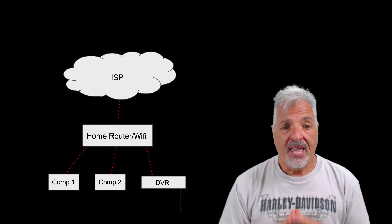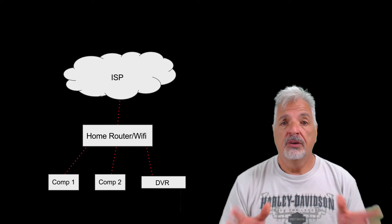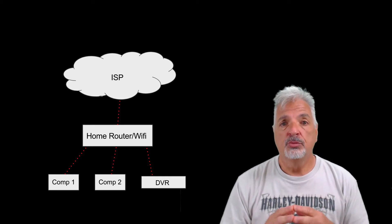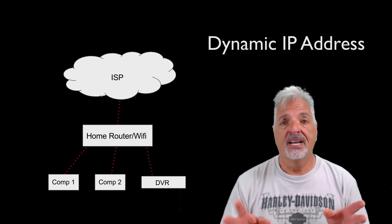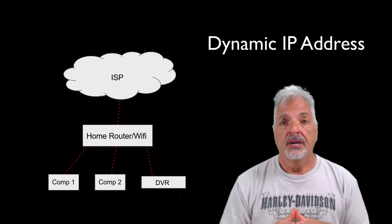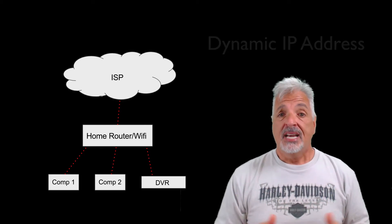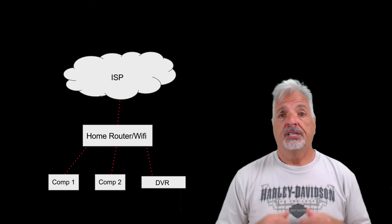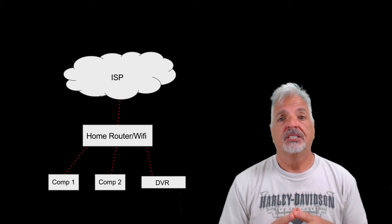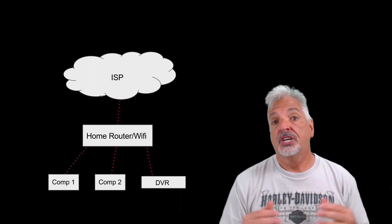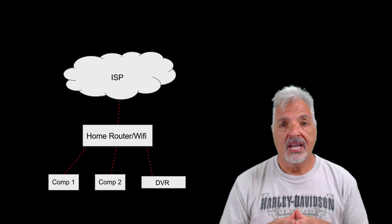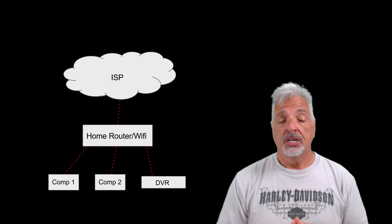In most cases, in a residential situation, the ISP issues what's called a dynamic IP address to a home router. Dynamic meaning that it will change. It could change every 30 days, it could change every week, it could also change daily, but one thing that is guaranteed — it will change.